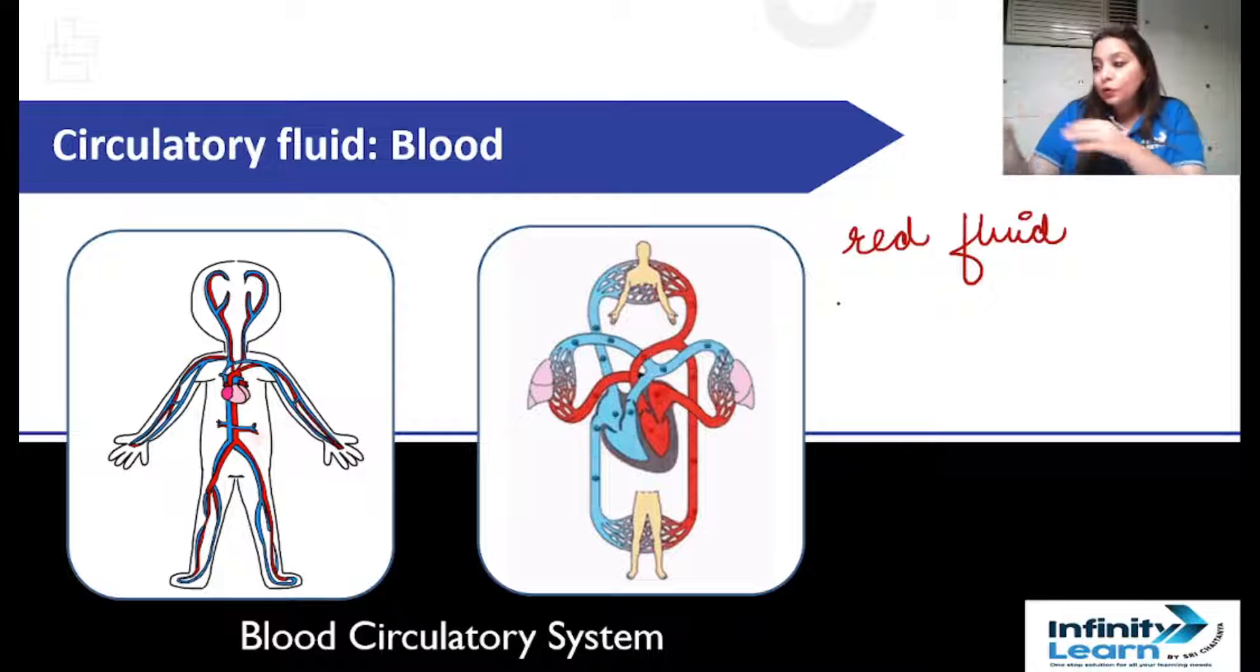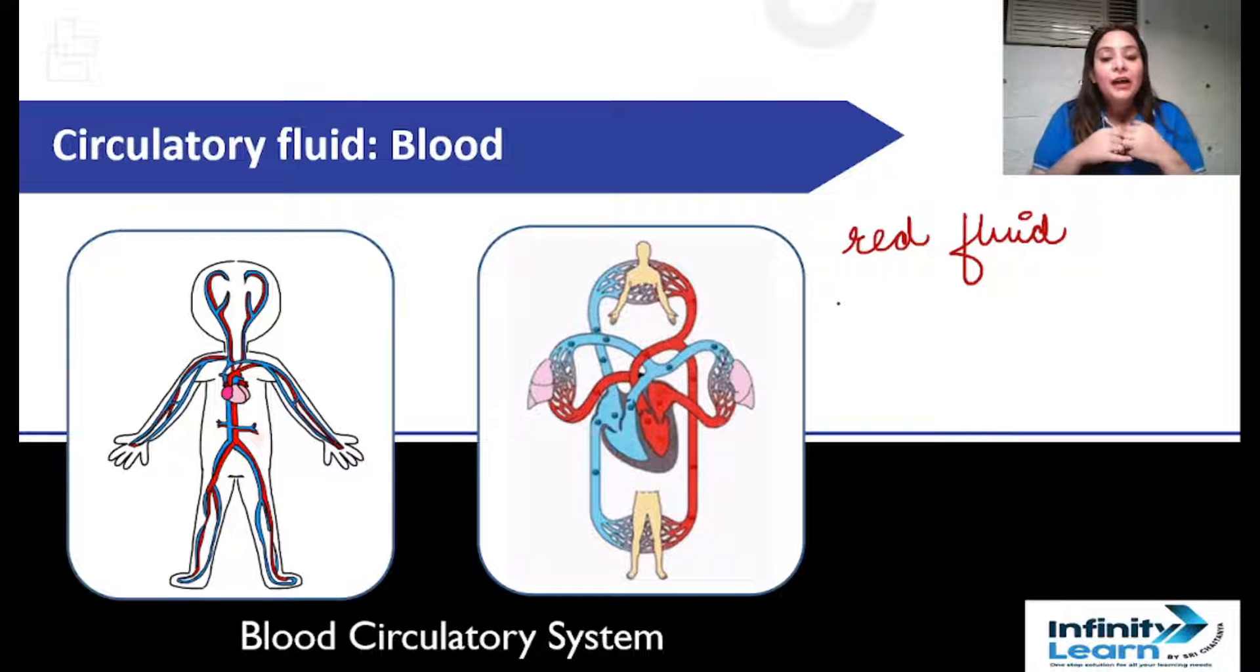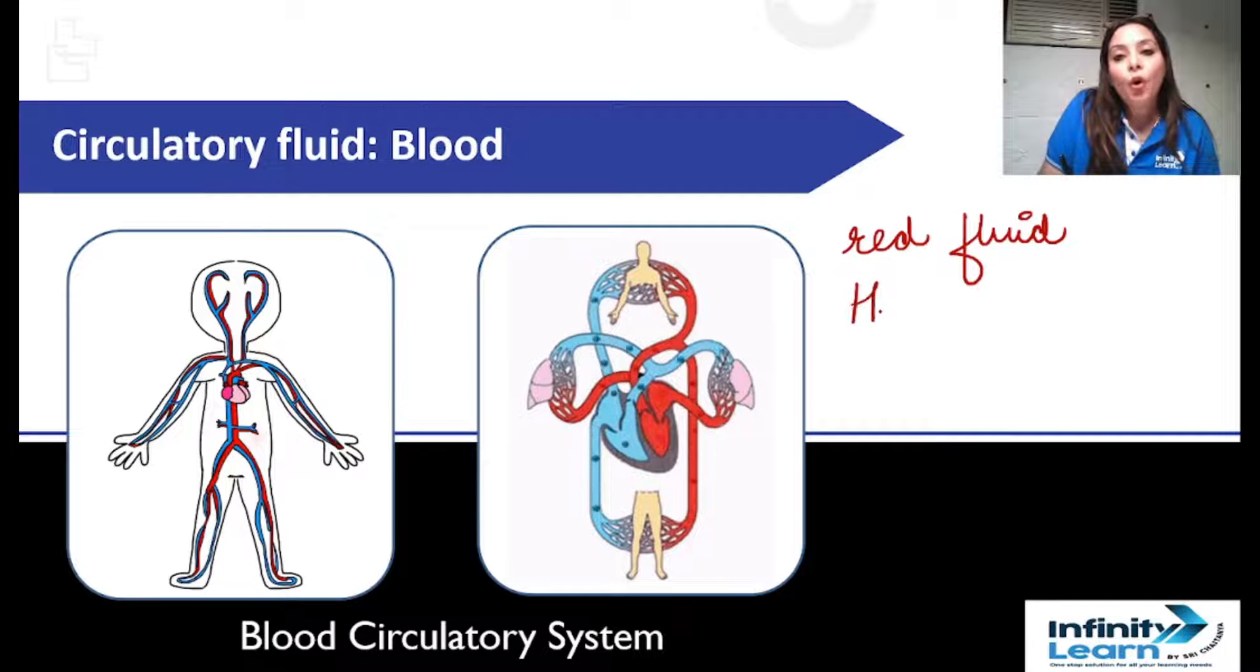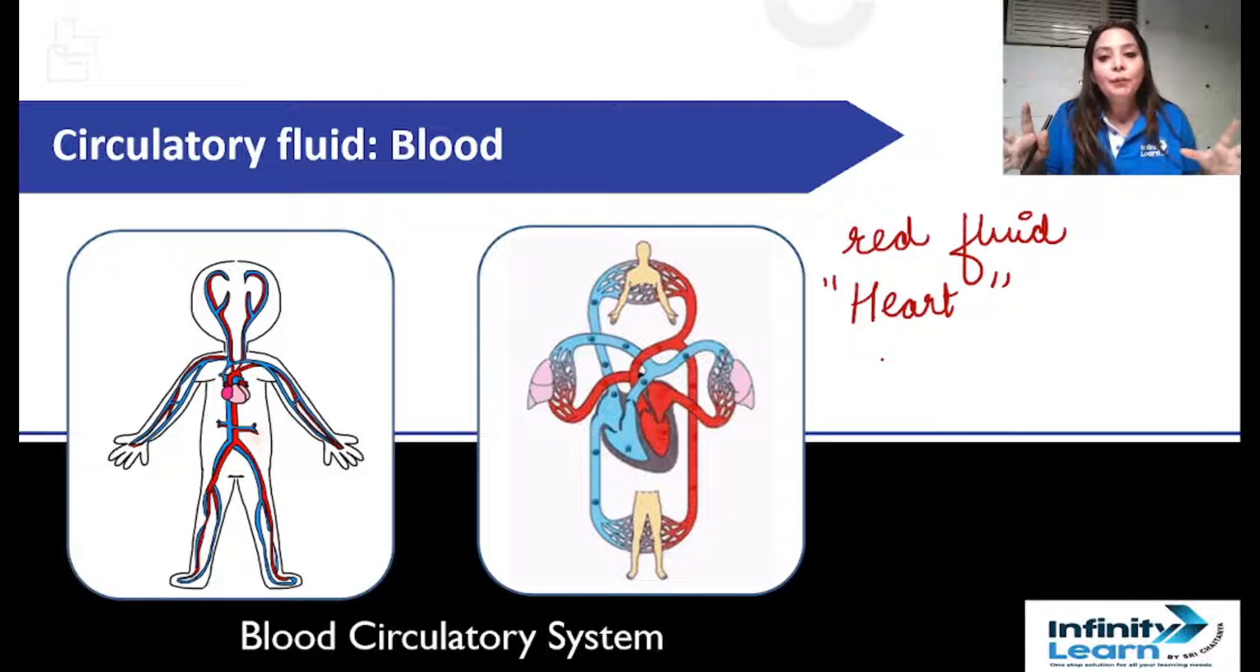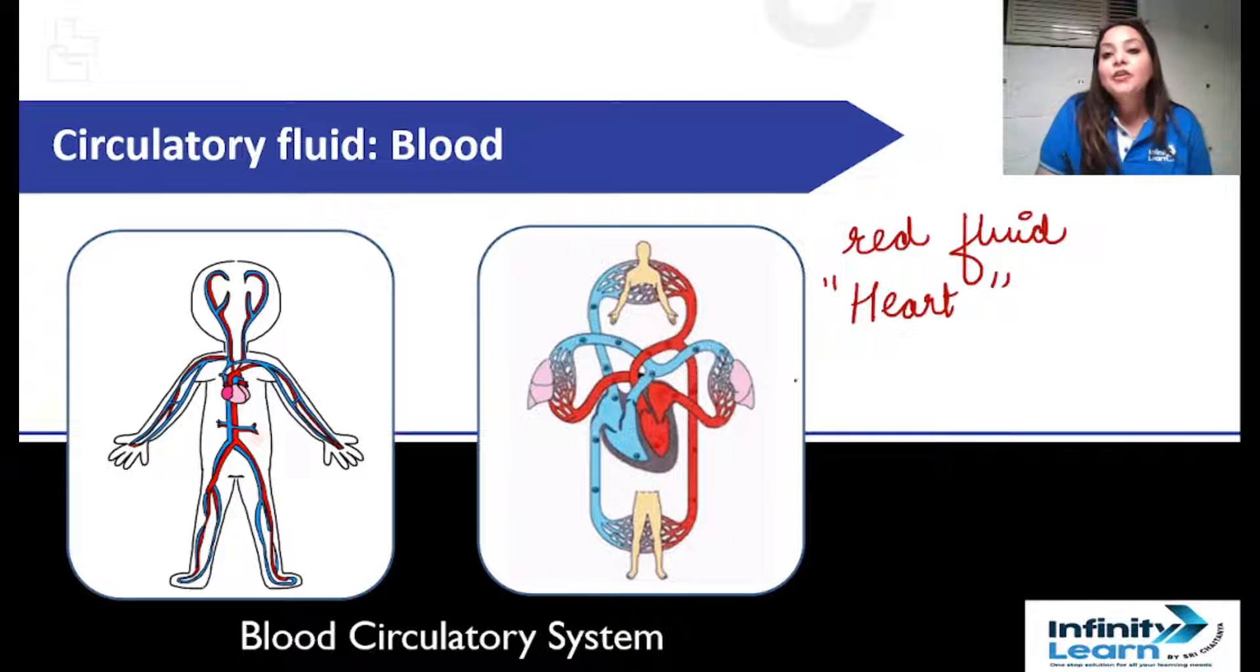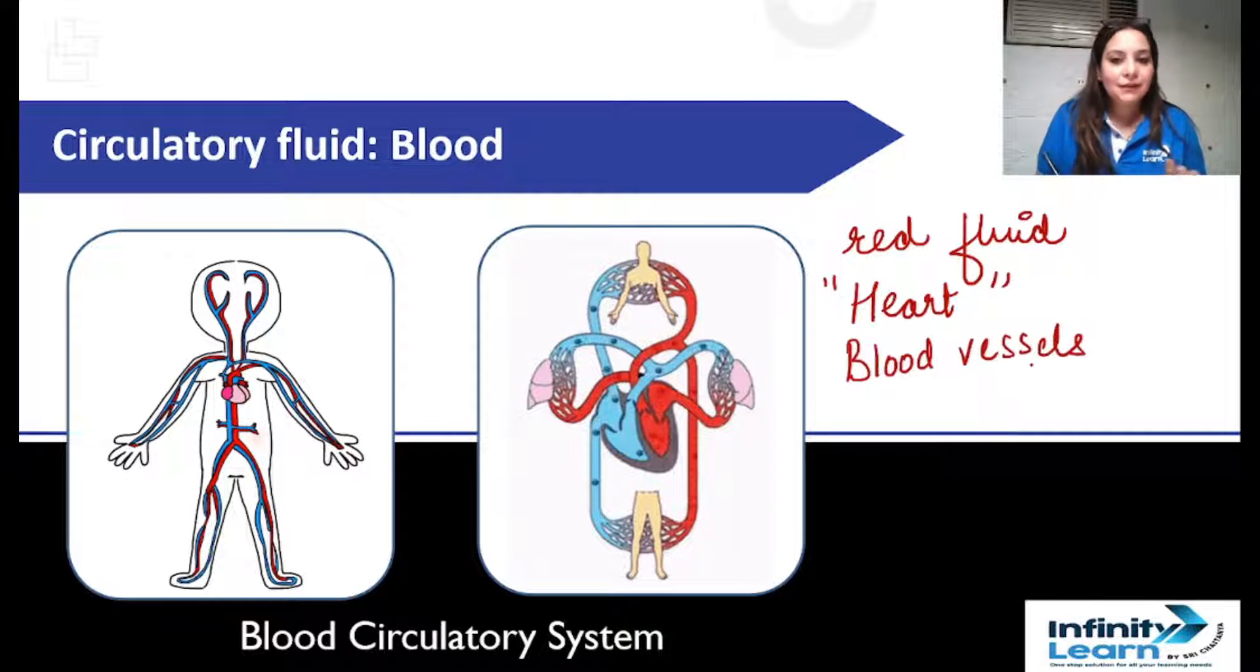Now, blood is a red colored fluid. Blood flows throughout the body because it has to go to the head, to the arm, to the fingertips, to the legs, to the feet, to the thumb. It has to go everywhere. So obviously it is pumped by a muscular walled pumping organ called heart.